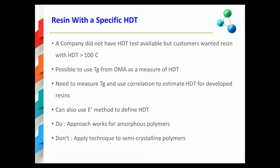Now I would like to discuss a brief case study that I was involved with that utilizes the type of information I was talking about on the previous slide. A company I was working with had obtained a request from one of their customers for a material that has an HDT value of greater than 100 degrees centigrade. Unfortunately, the company did not have an HDT testing unit, but they did have access to a DMA testing unit. They wanted to know how to relate their DMA test results to HDT values.